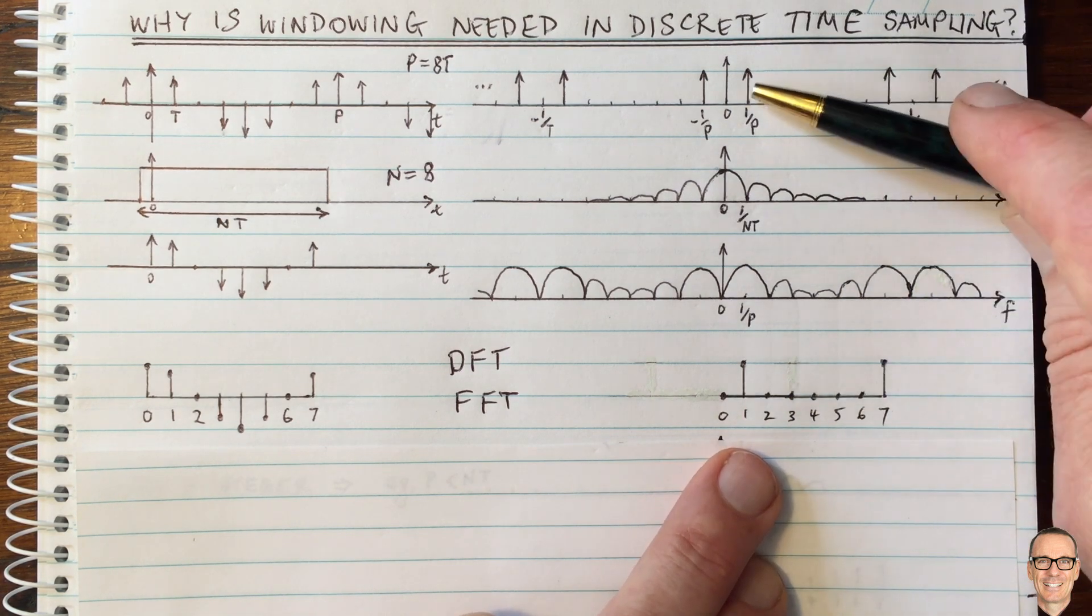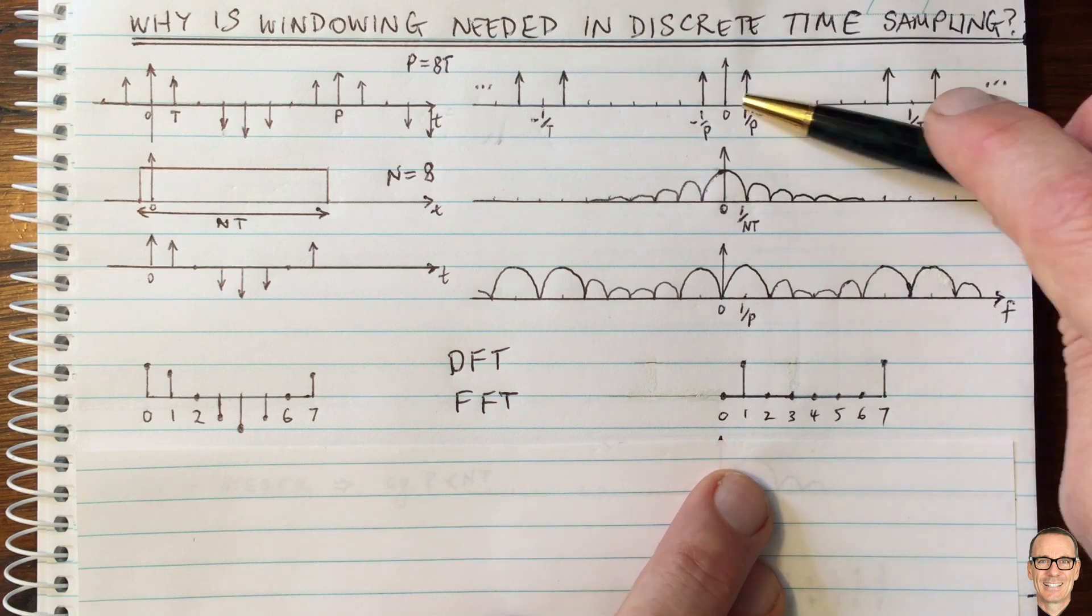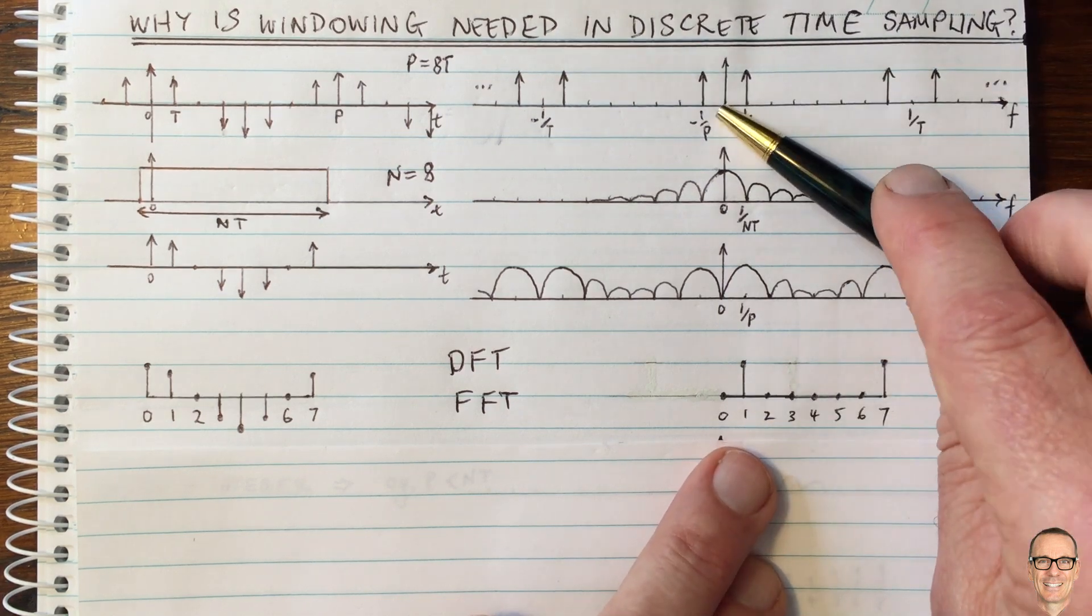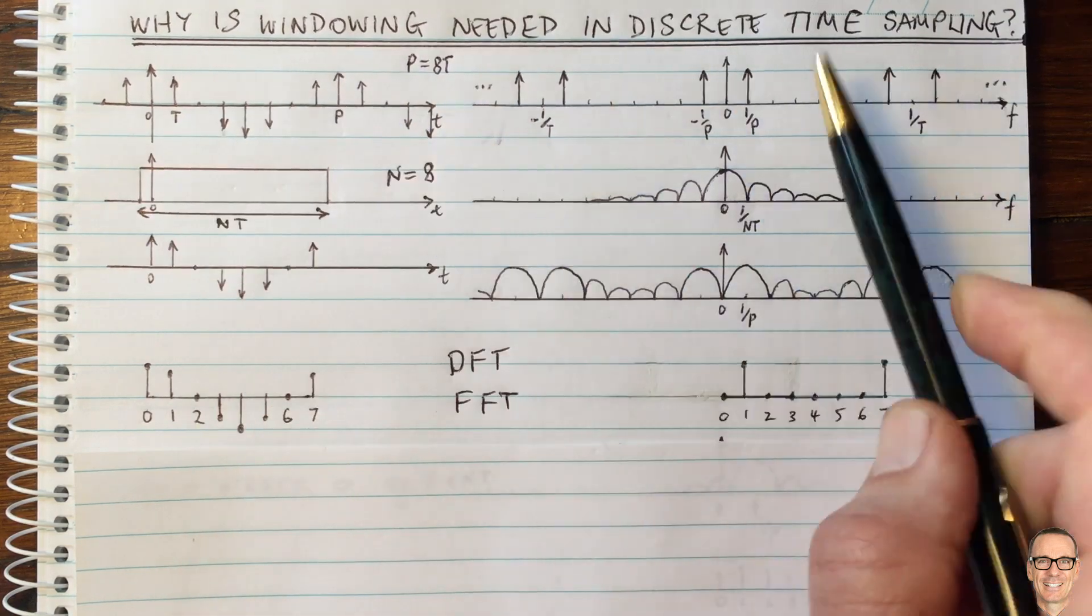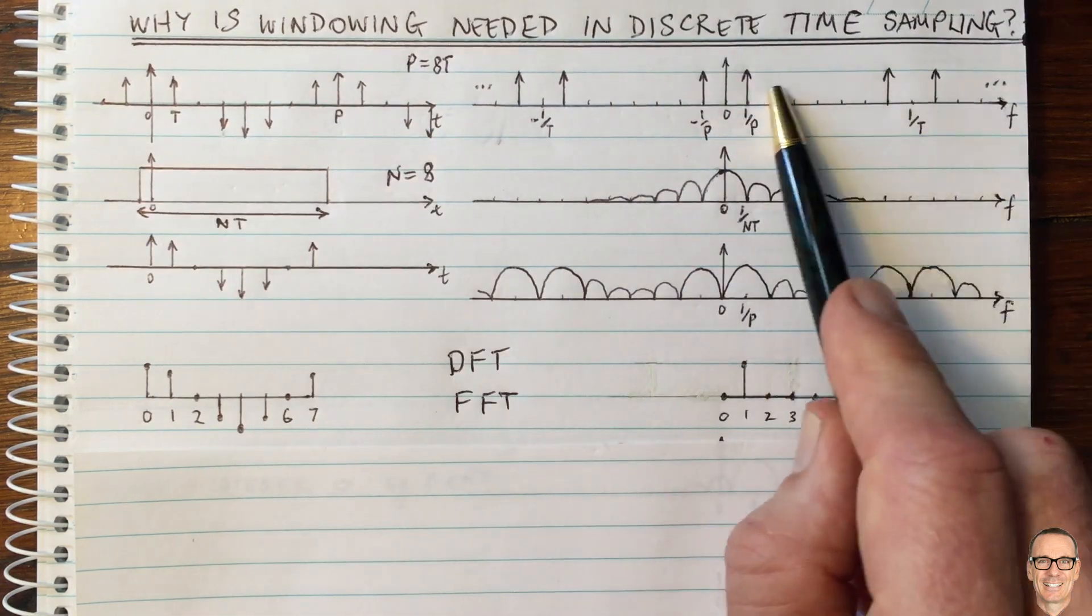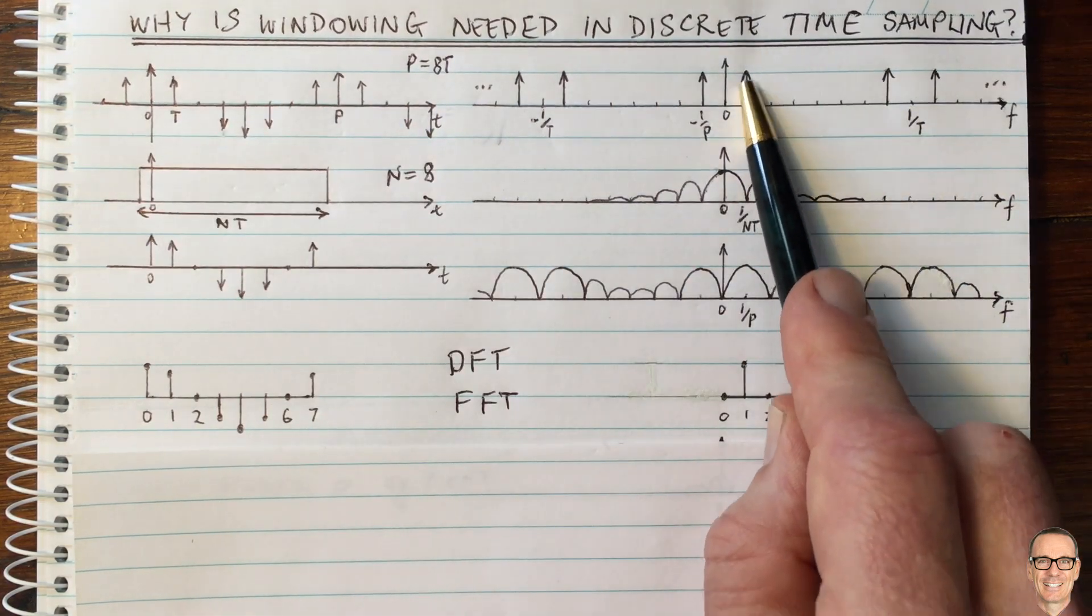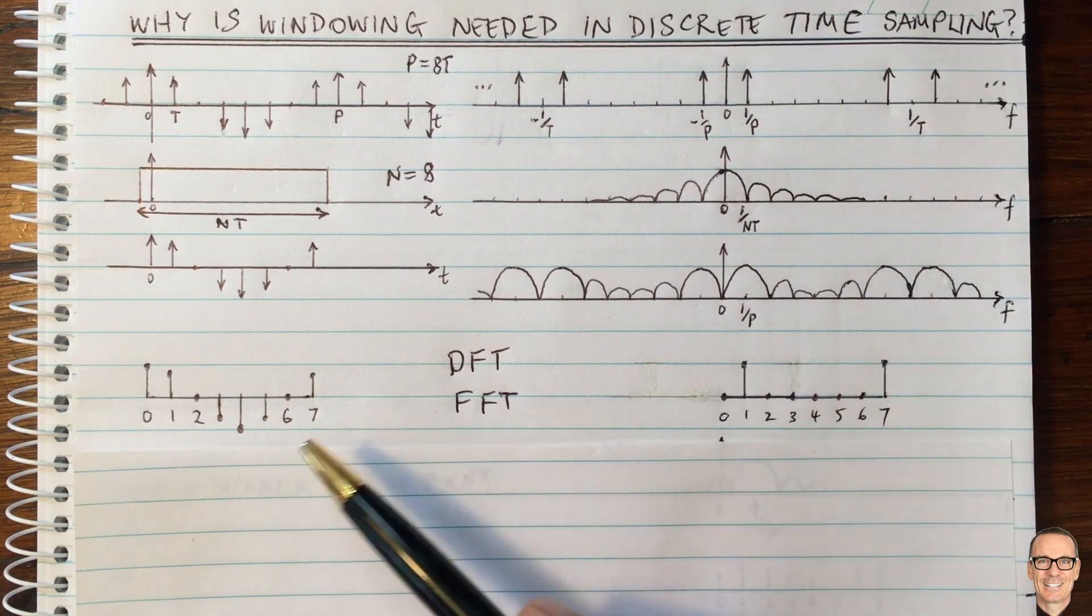These correspond exactly to the ones which are in the top diagram here. So in the top diagram, when we had the signal that went forever and was not windowed, we just had these continuous time delta functions at this value here and this value here.